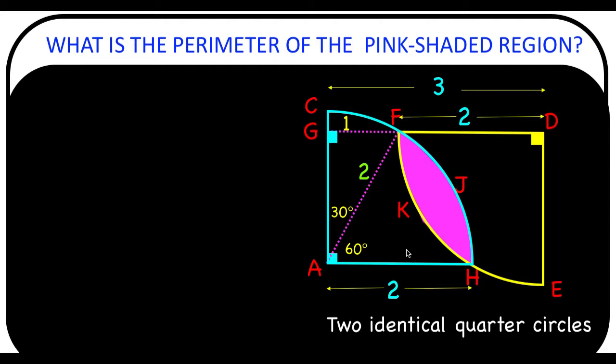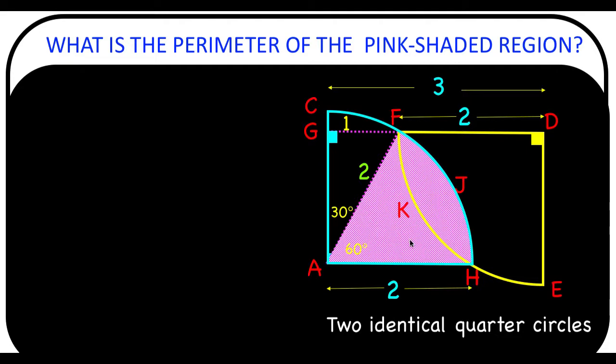So let's focus our attention to this sector. If this is 60 degrees, that means the length of arc FH must be 60 over 360 degrees of the entire circumference.